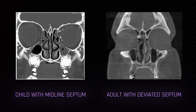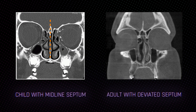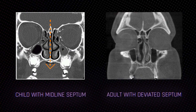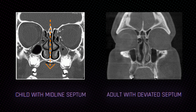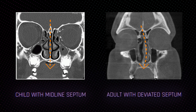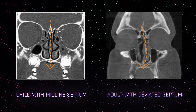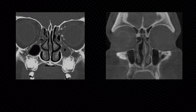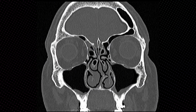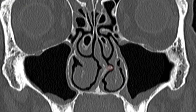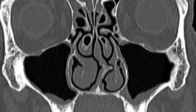Most septal deviations actually result from overgrowth in the vertical height of the septum in relation to the skull, resulting in bowing or shifting to one or both sides that worsens over time. Spurs result from abnormal thickening or horizontal growth of bone or cartilage from the septum.